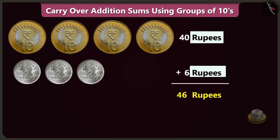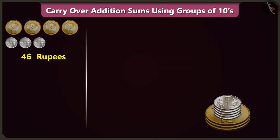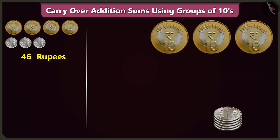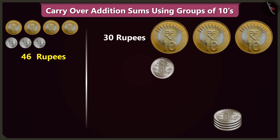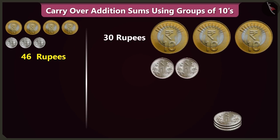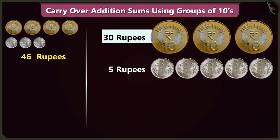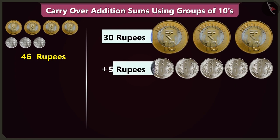In this pile of coins there are one, two, and three coins of ten rupees, which is thirty rupees, and one, two, three, four, and five one-rupee coins. So there are thirty and five — thirty-five rupees.